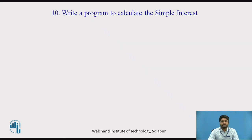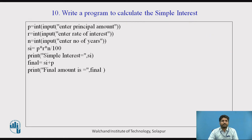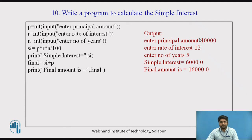We will see how to calculate simple interest. The formula for simple interest is PNR divided by 100. You need three variables: principal amount, rate of interest, and number of years. Simple interest SI = (P × N × R) / 100. One more variable, final amount = simple interest + principal amount. If the user enters principal amount 10,000, rate of interest 12, for 5 years, the simple interest would be 6,000 and the final amount would be 16,000.